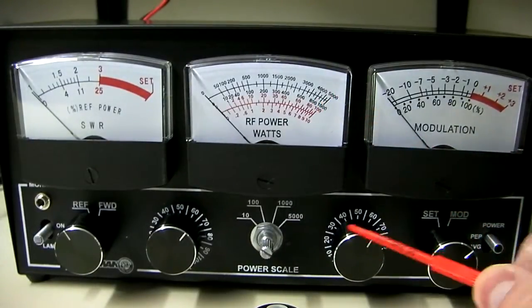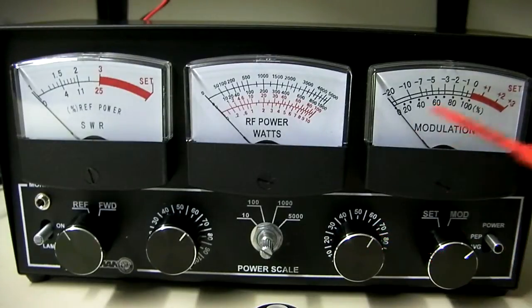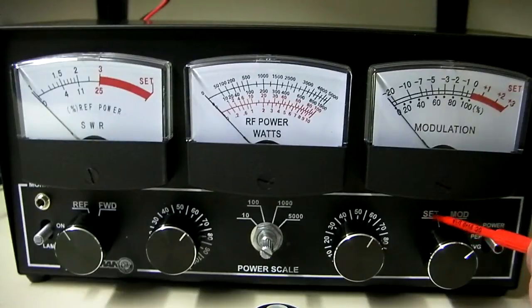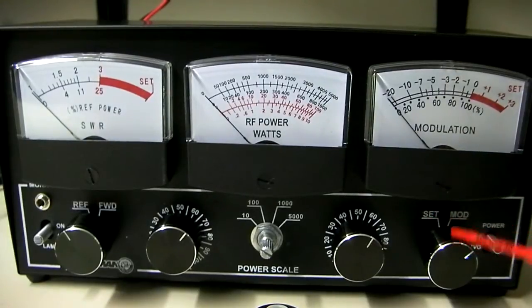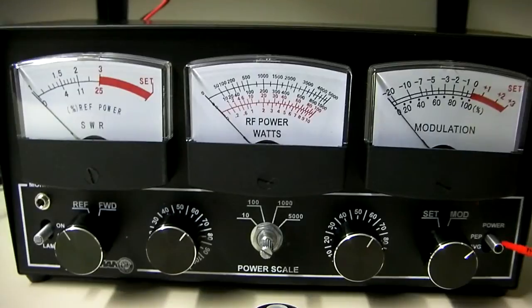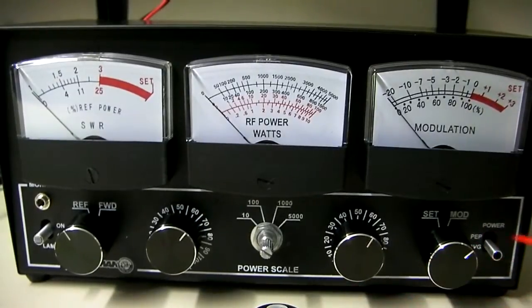Over here, we've got adjustment here for setting your modulation when you want to set it before you actually measure it. There's a set position and a modulation position on this knob here, modulation window here. Over here is your peak and average power switch.